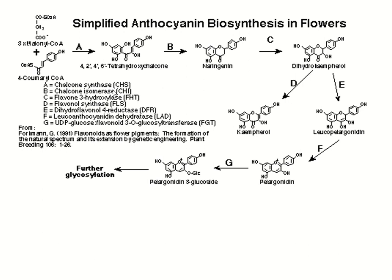Chalcone synthase is responsible for formation of 4,2,4,6-tetrahydroxychalcone because the precursors are three units of malonyl-CoA and one unit of 4-coumaroyl-CoA. From the same structure, removal of H₂O (one OH group removed) will form naringenin. Remember: naringenin is formed by the enzyme chalcone isomerase.